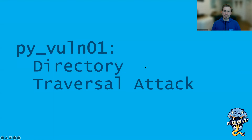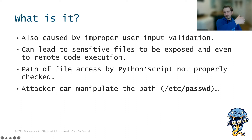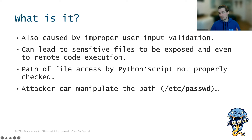Next is the directory traversal attack, which is also caused by improper user input validation. As you saw in the previous example, where you can list files using ls, you can use a directory traversal attack to go back some directories and see what's there as well. This can lead to sensitive files being exposed and also to remote code execution. It usually involves the file path not being properly checked, so an attacker could manipulate that path to access something like /etc/passwords or some other secret location.